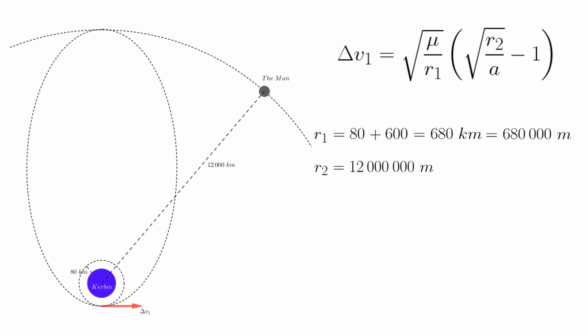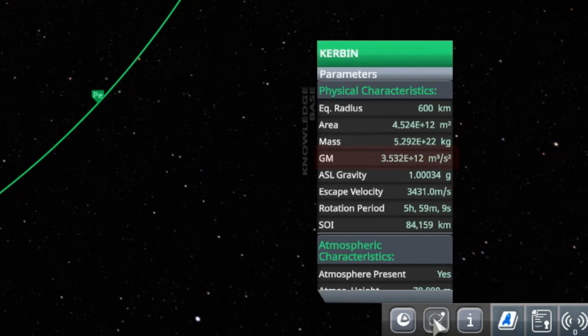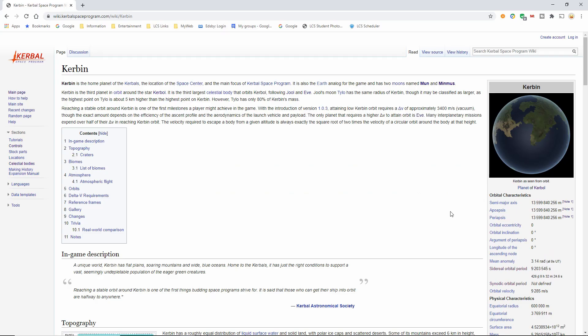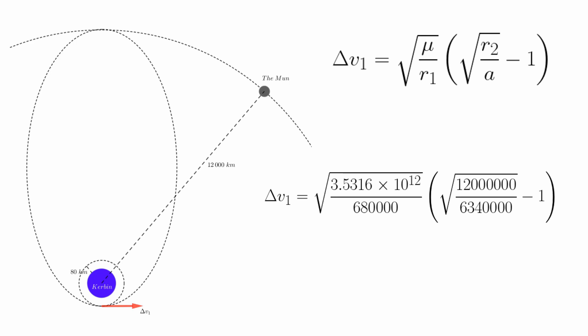All the formulas we'll be using require distances to be in meters, so the number we'll be putting in for R1 is 680,000. The semi-major axis A is simply the average of the two orbital radii — you just add the two R's and divide by 2 to get 6,340,000 meters. The Greek letter Mu represents the standard gravitational parameter for the parent body, in this case Kerbin. In-game Mu is denoted as GM, and all these numbers are available in the tracking station or at the KSP wiki. We put all these numbers into our formula, pull out a calculator, and find that our transfer to the moon should cost 856.36, or rounded to 856 meters per second.